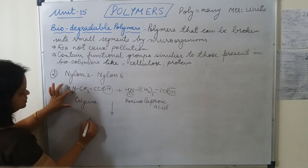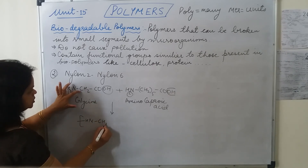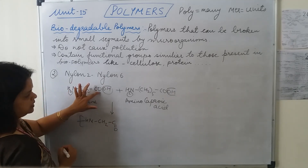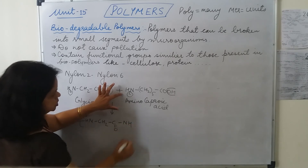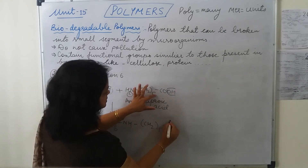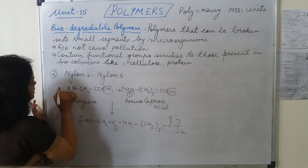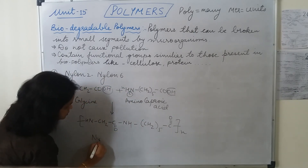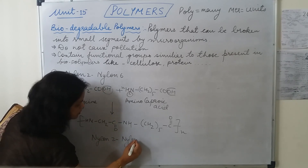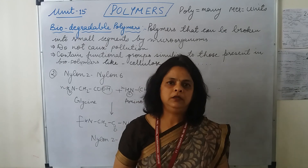Let's write the structure of Nylon 2, Nylon 6: starting with NH, then CH2, then C double bond O, then NH, then CH2 (×5), then C double bond O. This is our Nylon 2, Nylon 6. In this way students, we have completed our chapter on Polymers. Keep on studying.